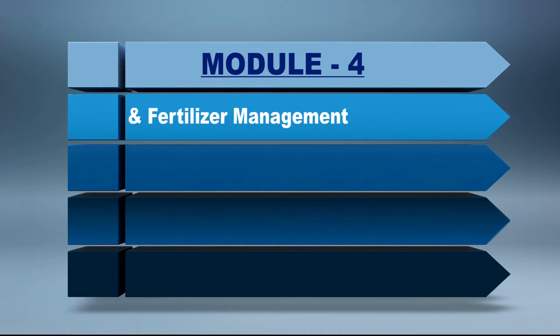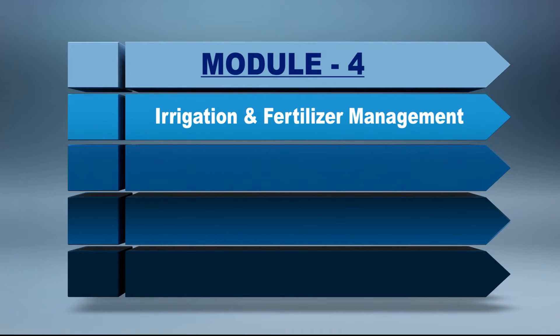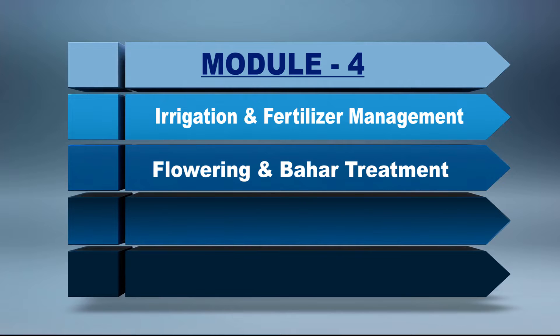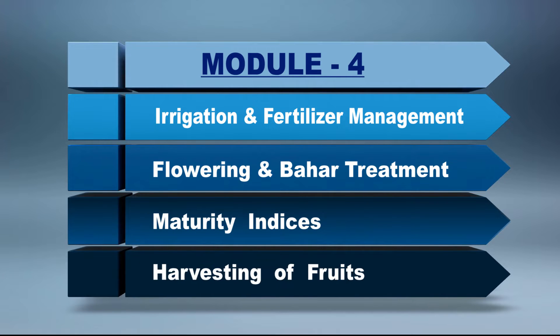In the fourth module, emphasis will be given on water and fertilizer requirements of pomegranate, as well as flowering, Baha treatment, maturity indices, and harvesting of fruits.